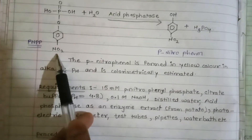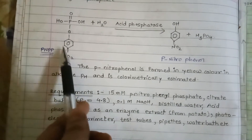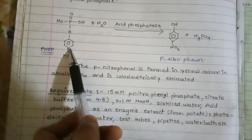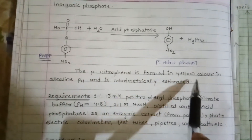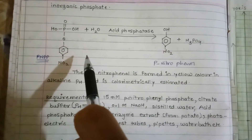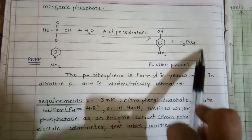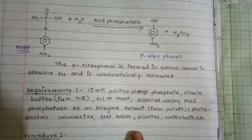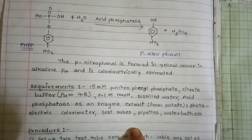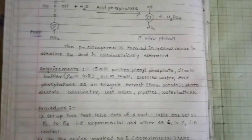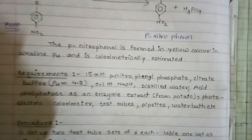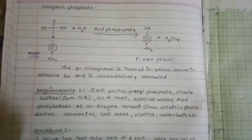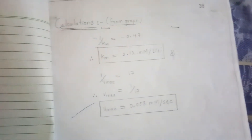PNPP has a nitro group (NO2) in its structure. In the presence of acid phosphatase, P-nitrophenyl phosphate is converted to para-nitrophenol and phosphoric acid is released. The para-nitrophenol formed is yellow in color at alkaline pH. Since NaOH is added to stop the reaction and create alkaline pH, the yellow color can be estimated colorimetrically.